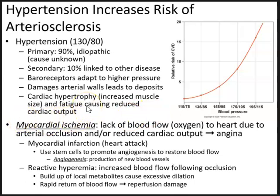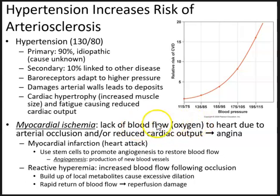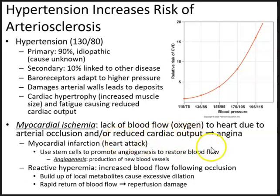Another pathology is myocardial ischemia, or infarction. There is a lack of blood flow, causing a decrease in the amount of oxygen transported to the heart. This is usually due to arterial occlusion and/or reduced cardiac output, and can cause symptoms of chest pain or angina.